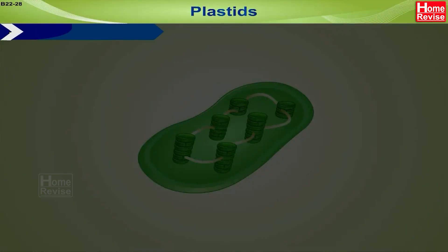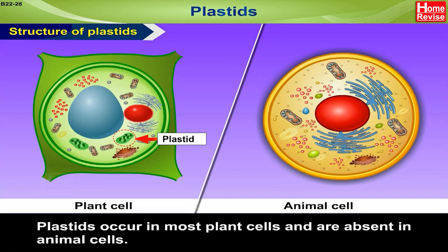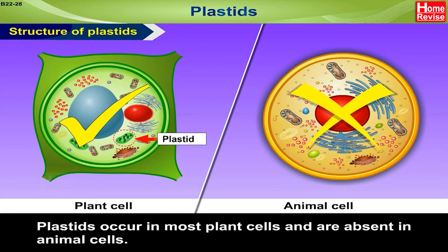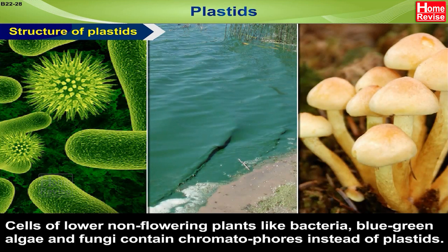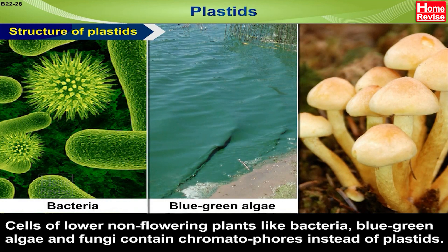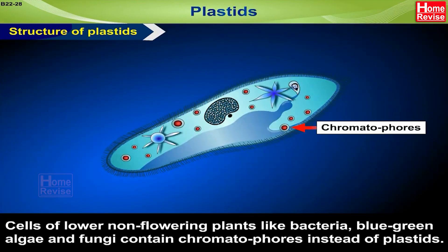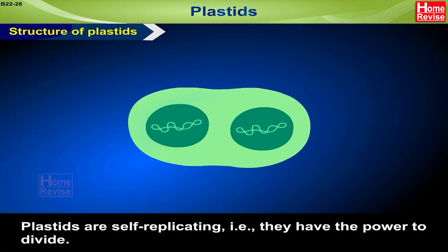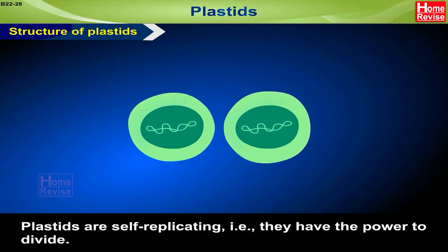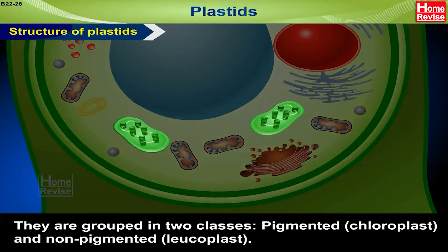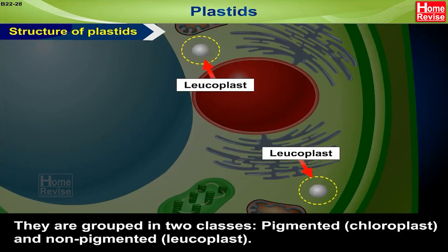Plastids. Structure of Plastids. Plastids occur in most plant cells and are absent in animal cells. Cells of lower, non-flowering plants like bacteria, blue-green algae and fungi contain chromatophores instead of plastids. Plastids are self-replicating — i.e., they have the power to divide. They are grouped in two classes: pigmented, including chloroplasts, and non-pigmented, including leukoplasts.